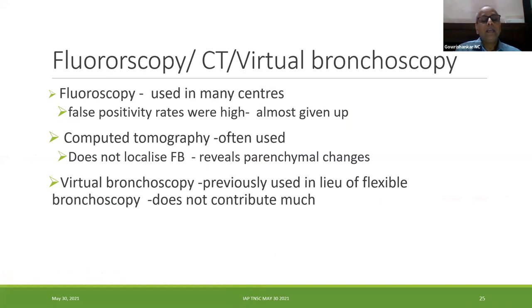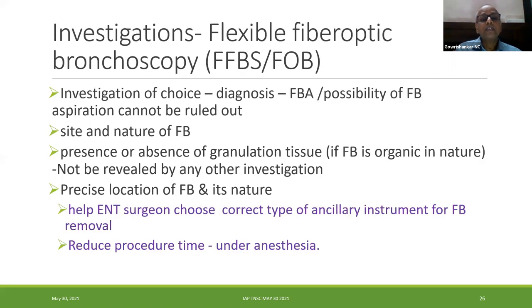Fluoroscopy was used previously in the late 1980s and early 1990s for diagnosing foreign body aspiration before the wider usage of flexible bronchoscopy. CT does not localize the foreign body — it reveals only parenchymal changes. Virtual bronchoscopy has been tried but does not contribute much. Flexible bronchoscopy is the investigation of choice, as it reveals the site, nature, and the presence or absence of granulation tissue, which no other investigation provides.